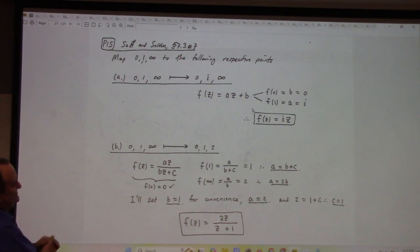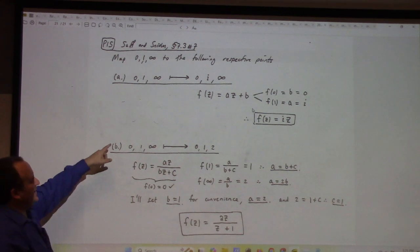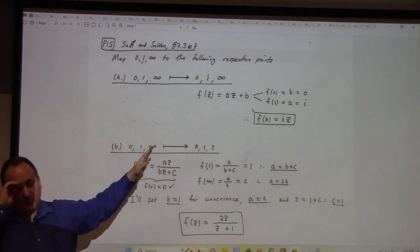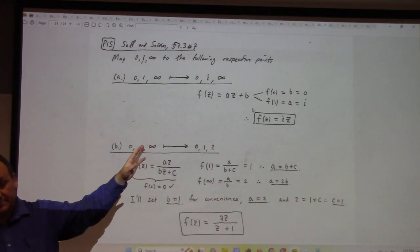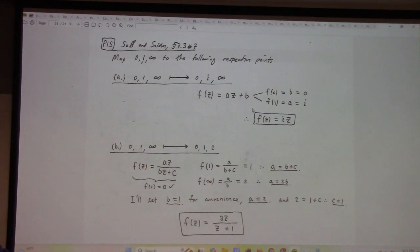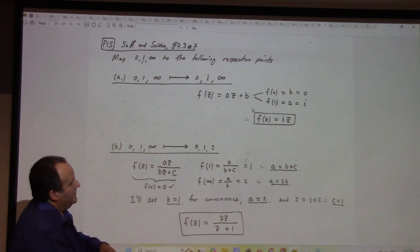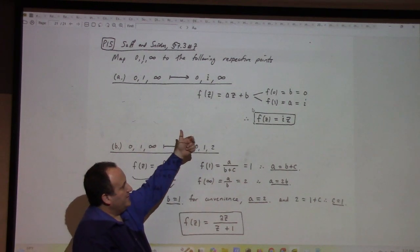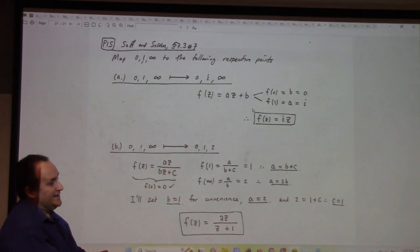These are actually very fun, right? It was an odd problem, so you guys should have got this one, right? Anyway, so if infinity maps to infinity, it's of the form a z plus b. It has to be. That's the only way you can get infinity to infinity. It has to be linear. And as such, I can just plug in f of 0 is 0, f of 1 is 1, and that gives me i z.